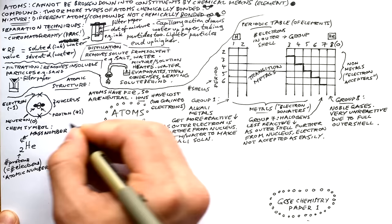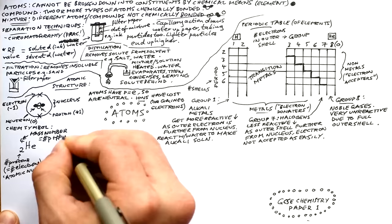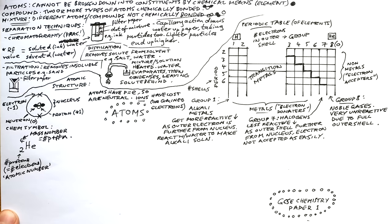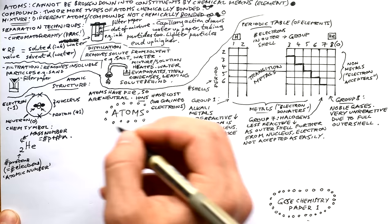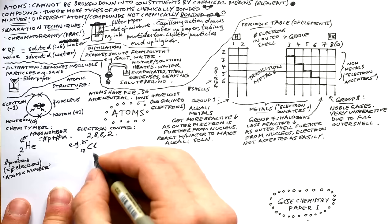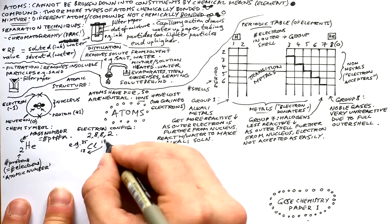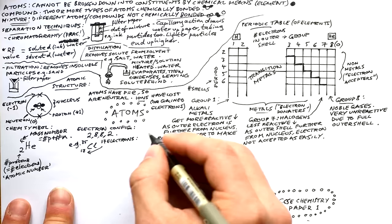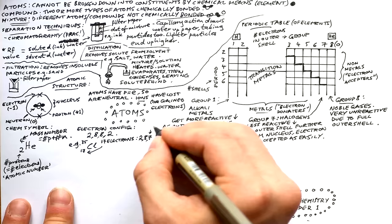On a chemical symbol, the bottom number is the atomic number — that's the number of protons (and for a neutral atom, also the number of electrons). The top number is the mass number — protons plus neutrons — so to find neutrons, subtract atomic number from mass number. Electrons fill shells in the pattern 2, 8, 8, 2. For example, chlorine has atomic number 17, so its electron arrangement is 2, 8, 7.